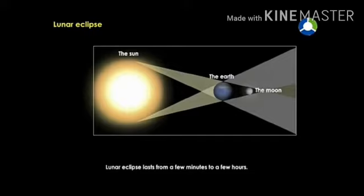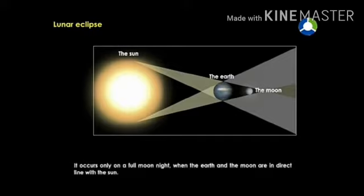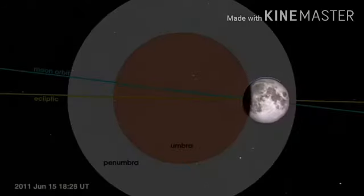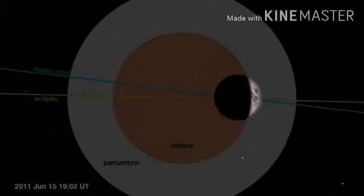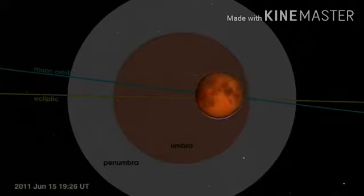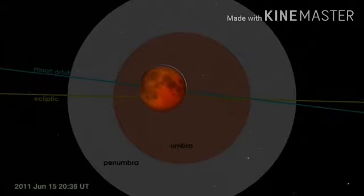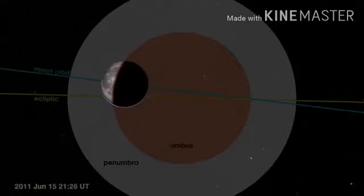A lunar eclipse lasts from a few minutes to a few hours. It occurs only on a full moon night when the Earth and moon are in a direct line with the sun. When the moon is inside the umbra shadow, it appears red in color. As soon as the moon exits from the umbra shadow, it appears in its crescent shape.